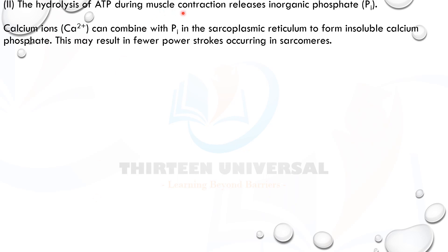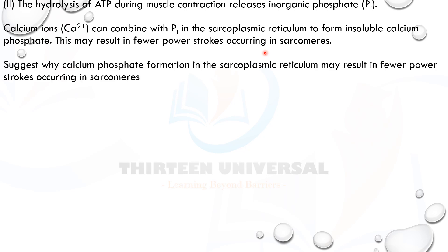The next part: the hydrolysis of ATP during muscle contraction releases inorganic phosphate. Calcium ions can combine with inorganic phosphate in the sarcoplasmic reticulum to form insoluble calcium phosphate. This may result in fewer power strokes occurring in the sarcomere. Suggest why calcium phosphate formation in the sarcoplasmic reticulum may result in fewer power strokes. Pause the video and work out this question.